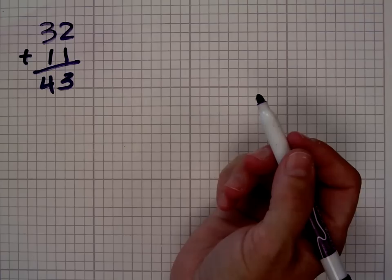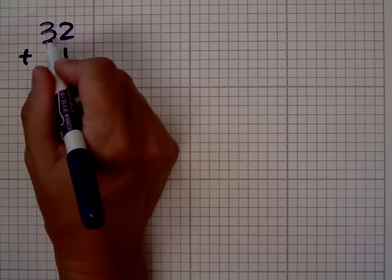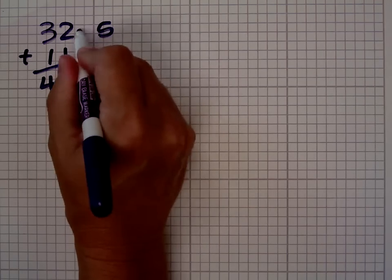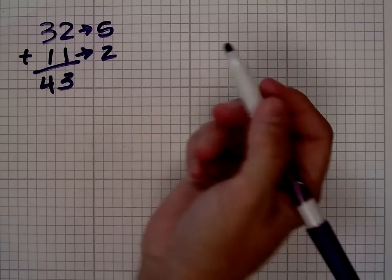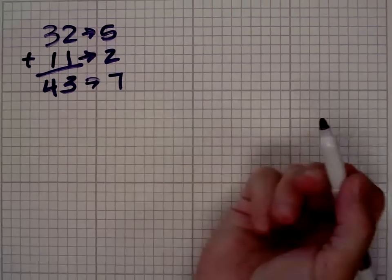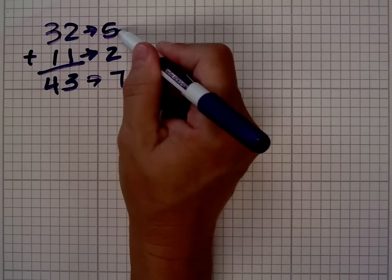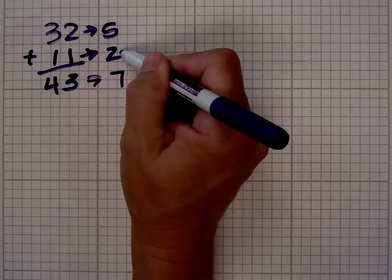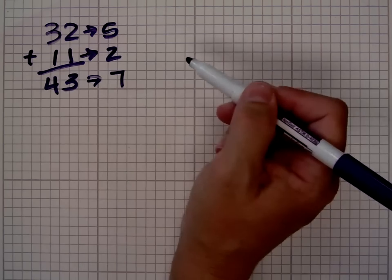The sum of the digital roots should be the same as the digital root of the sum. What do I mean by that? The digital root of 32 is 5, the digital root of 11 is 2, and the digital root of 43 is 7. The sum of the digital roots, 5 plus 2 is 7, is the same thing as the digital root of the sum.